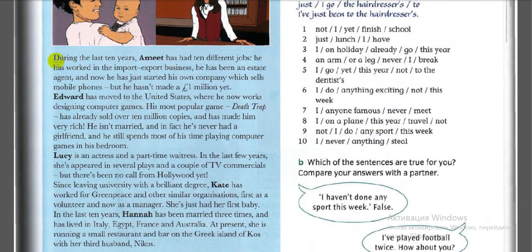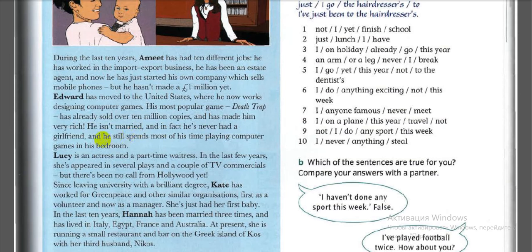During the last ten years, Amit has had ten different jobs — working in the import-export business and as an estate agent. He has just started his own company selling mobile phones, but he hasn't made a million pounds yet. Edward has moved to the United States, where he designs computer games. His most popular game, Death Trap, has already sold over ten million copies and made him very rich. He has never had a girlfriend and still spends most of his time playing computer games.